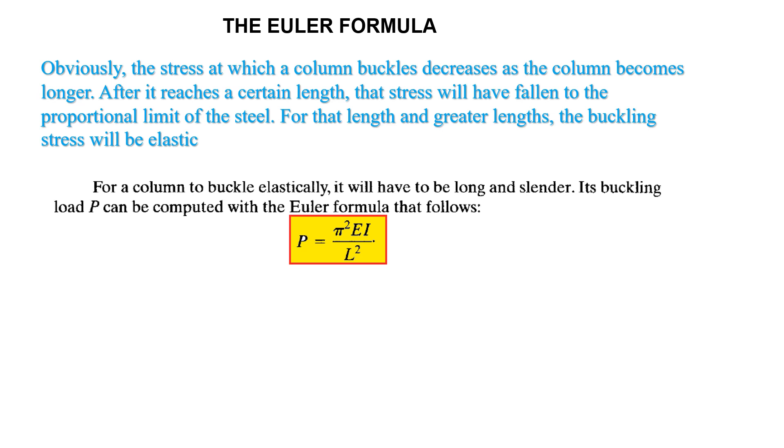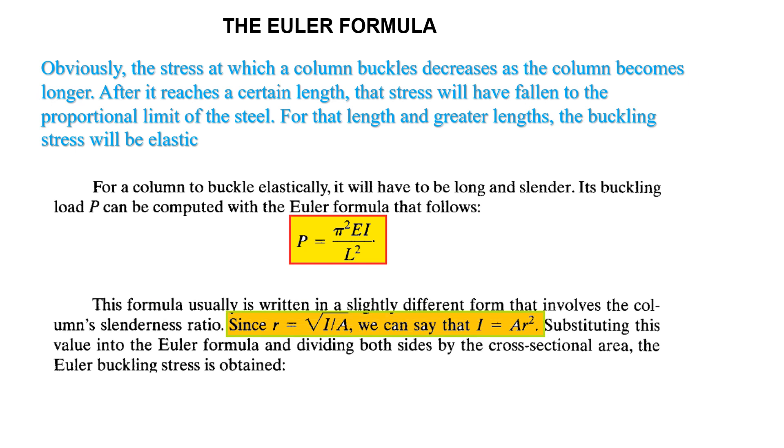Its buckling load P can be computed with the Euler formula: P equals π squared EI by L squared. This formula is usually written in a slightly different form that involves the column slenderness ratio.